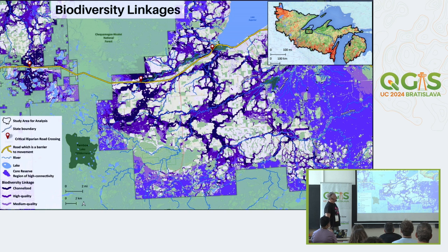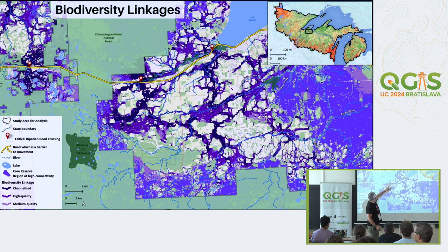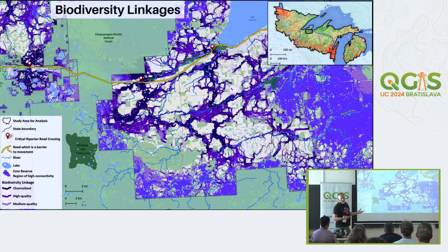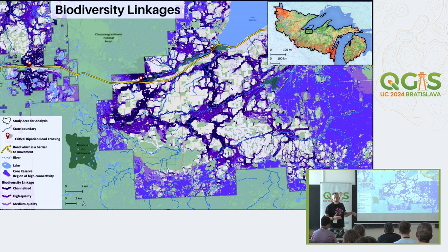Zooming into another area, you can really see the dendritic pattern for the linkages. Here's a national forest with riparian linkages across a highway barrier. You can see how many different options there are for connectivity between these different areas - which models reality quite well, but also gives planners options for what may be lower hanging fruit to protect and what may be more difficult.